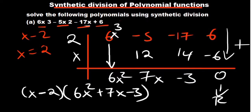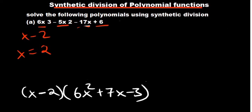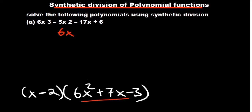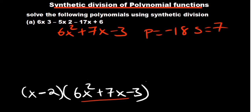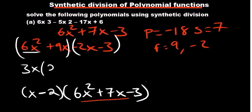From this stage, since we now have a quadratic function, I'd advise using the factorization method rather than synthetic division again — it saves time. For the product we have minus 18, and for our sum we have 7, so the factors we expect are 9 and negative 2. This gives us 6x² plus 9x minus 2x minus 3. The highest common factor of the first two terms is 3x, giving 3x(2x + 3), and we factor out negative 1 from the last two, giving negative 1(2x + 3). So our factors are (3x minus 1) and (2x plus 3).